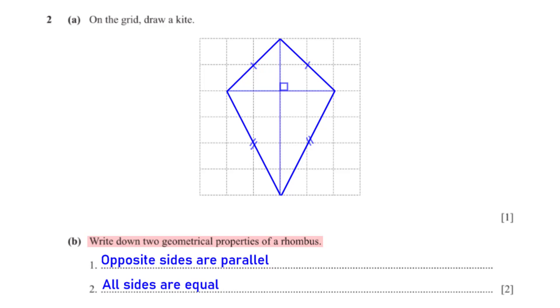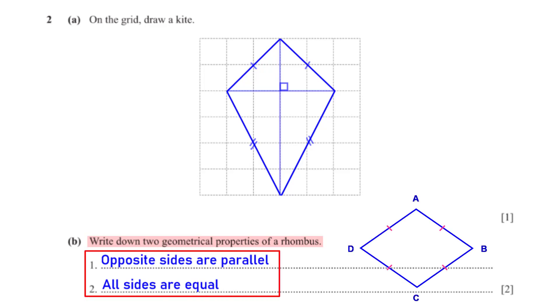Write down two geometrical properties of a rhombus. Two of the properties of a rhombus are: opposite sides are parallel, and all four sides are equal.